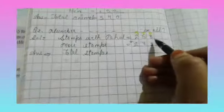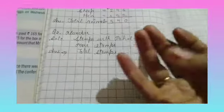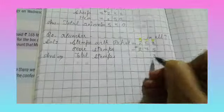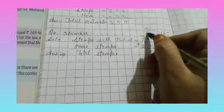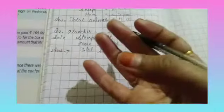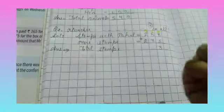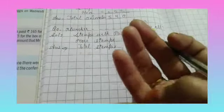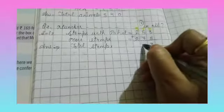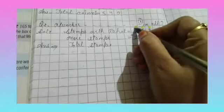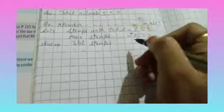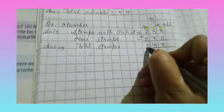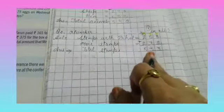So 8 plus 5: starting from 8, count 5 fingers — 9, 10, 11, 12, 13. So write 3 and carry over 1. Tens: 2, 3, 4, 5, 6, 7, 8, 9, 10, 11, 12, 13 — write 3 and carry over 1. Hundreds: 1 plus 2 is 3, then 4, 5. So how much is the answer? 533.